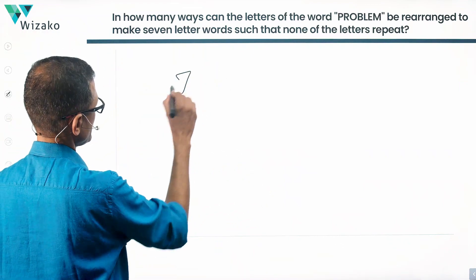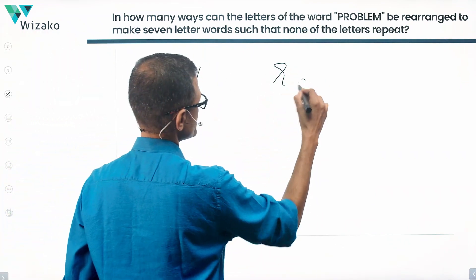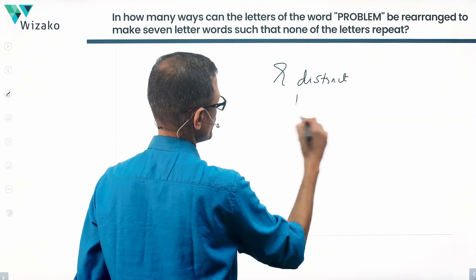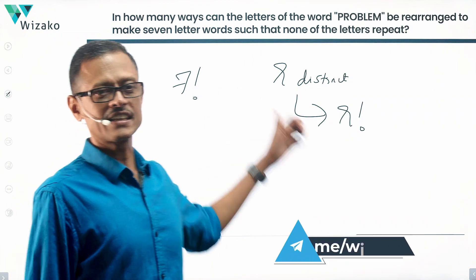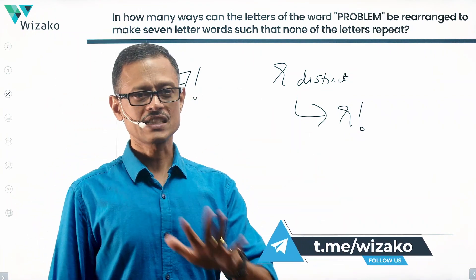The answer is seven factorial. You have r distinct objects. In how many ways can they be reordered? They can be reordered in factorial r ways. We have seven distinct letters. They can be reordered in factorial seven ways.